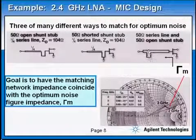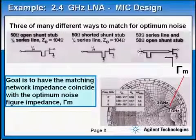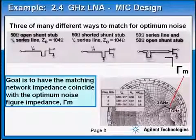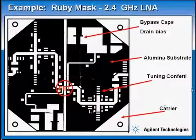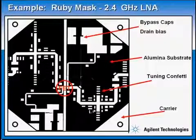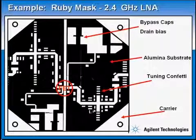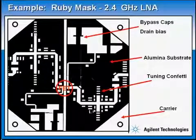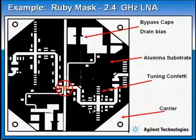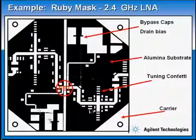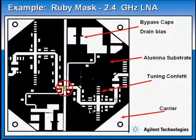I decided to choose topology number one, which is a series line with an open stub to take me to this point. I went ahead and designed my rubylith, which is 10 times the size of the actual circuit. The actual circuit is 1 inch, so the rubylith is 10 inch by 10 inch. You can see the series line and the open stub. Those are confettis just for tuning purposes. This is the 50 ohm line and the blocking capacitor. The FET lands right in the center. This is the bias for the gate, and this is the bias for the drain. This is the output matching network to maximize gain and output return loss.